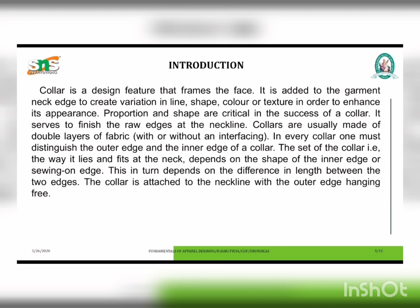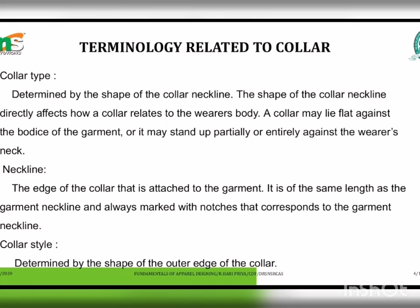The collar is attached to the neckline, with the outer edge hanging free. The first terminology related to collars is collar type, which is determined by the shape of the collar neckline. The shape of a collar neckline directly affects how a collar relates to the wearer's body. A collar may lie flat against the body of the garment, or it may stand up partially or entirely against the wearer's neck. Next, the neckline: the edge of the collar that is attached to the garment, of the same length as the garment neckline, always marked with notches that correspond to the garment neckline.